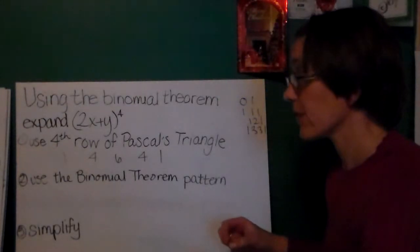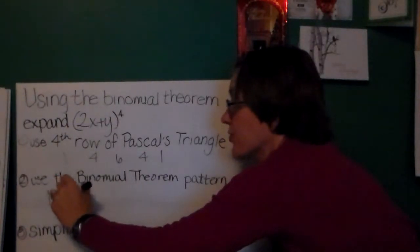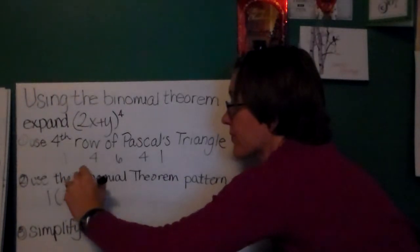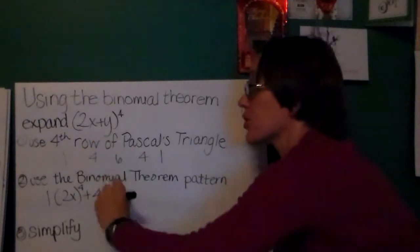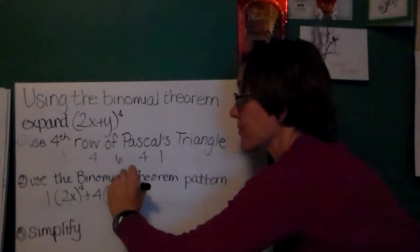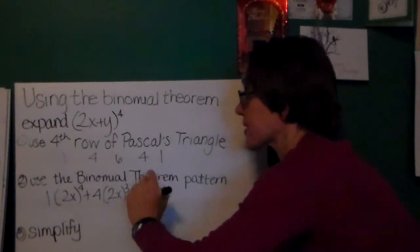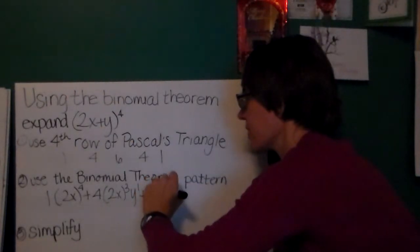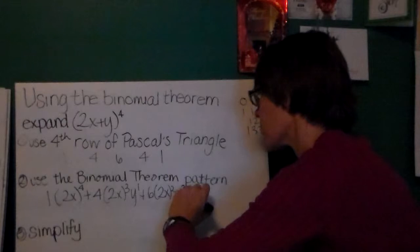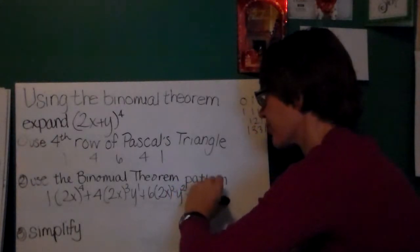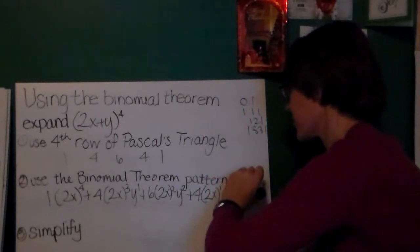Now, then I'm going to use the binomial theorem pattern. I'm going to do 1 times 2x to the 4th power, plus 4 times 2x to the 3rd power times y, plus 6 times 2x squared times y squared, plus 4 times 2x times y cubed, plus 1 times y to the 4th power.